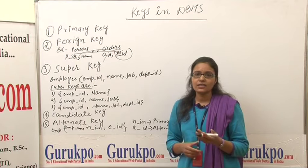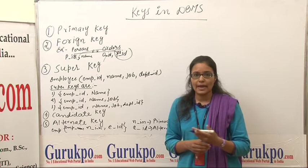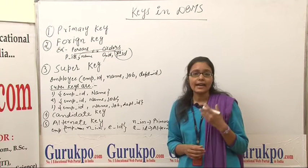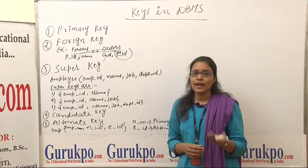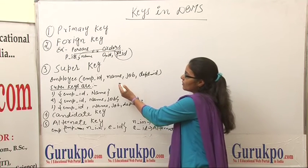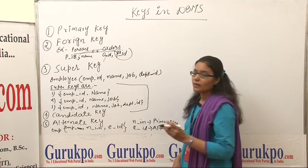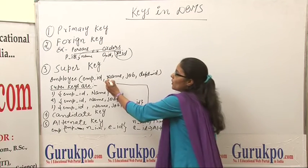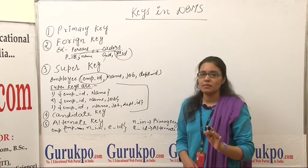The next one is candidate key. A candidate key has the ability to become the primary key. So a candidate key can act as a primary key and is also used to uniquely identify each record in a table. For example, from the previous example of super keys, the minimal super key is also treated as a candidate key. Here, Employee ID will be treated as a candidate key because it is a minimal super key.